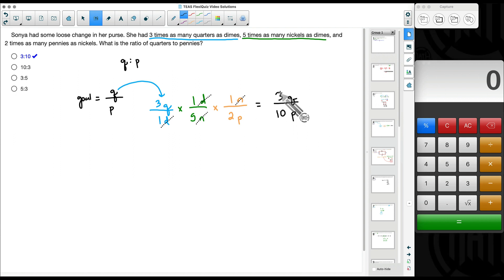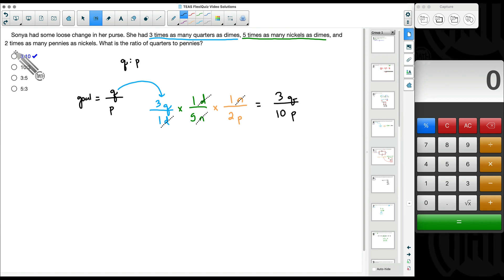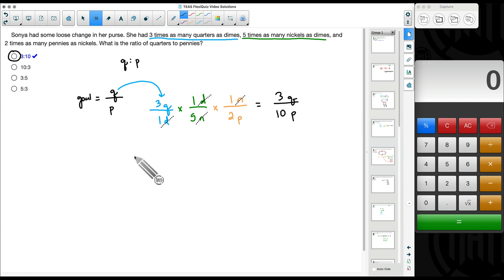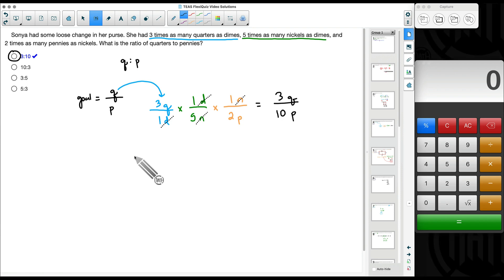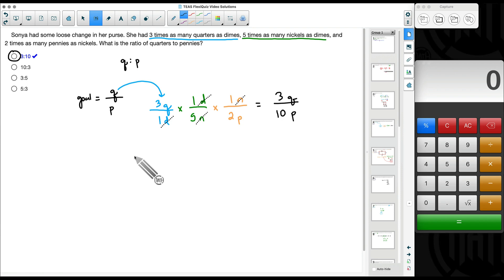Three to ten. For every three quarters she has, she has ten pennies. And notice that is our answer right there. Now if that was a little bit confusing, again I did mention earlier, check out the link in the video solutions provided for this problem for another way of doing this coins and ratio problem.